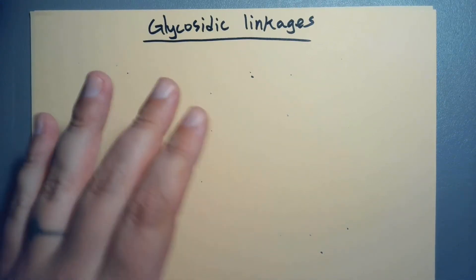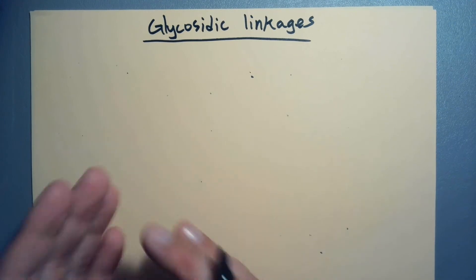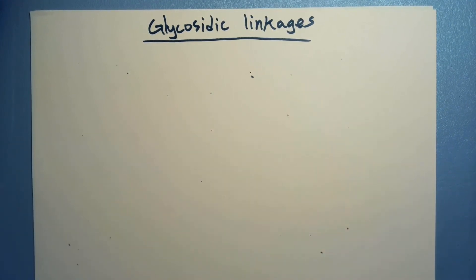Alright, so we're going to start putting these monosaccharides together, make polysaccharides, and what connects them, the type of bond that puts them together, what do we get at the end, are glycosidic linkages.